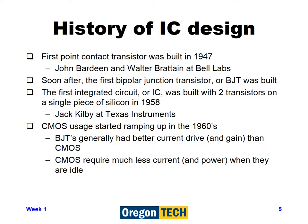CMOS usage started ramping up in the 1960s. Bipolar junction transistors generally had better current drive and better gain than CMOS, but CMOS requires much less current and power when in the idle state. That has become most important as we've continued designing transistors on integrated circuits, and so nowadays we use mostly CMOS design.